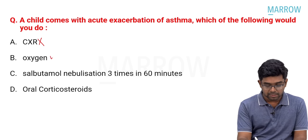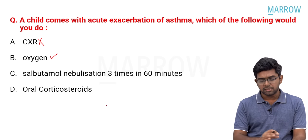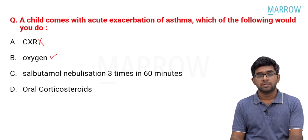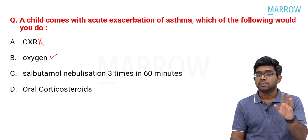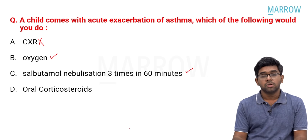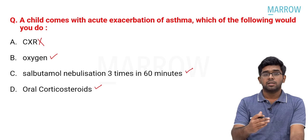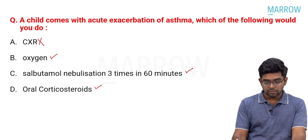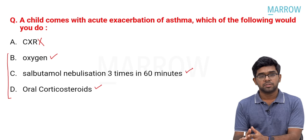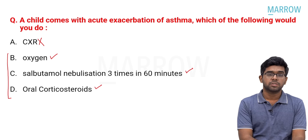Oxygen is definitely indicated in the management of asthma. Salbutamol nebulization three times in 60 minutes — giving salbutamol nebulization once every 20 minutes, that means three times in one hour — is a standard treatment. This is a true statement. Oral steroids are also found to be useful in acute exacerbation of asthma. So except chest X-ray, everything is useful in the management of acute exacerbation of asthma.